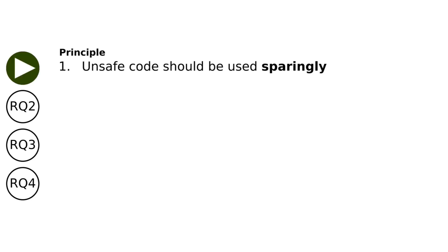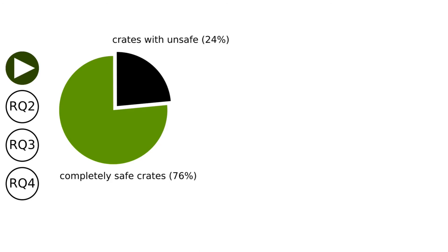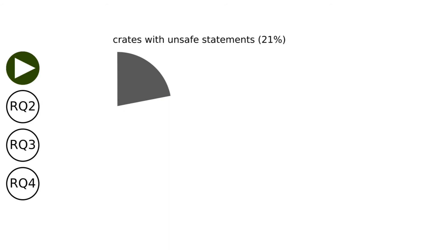Let's now look at our four research questions one by one. The first principle claimed that unsafe code should be used sparingly. Therefore, our first question is: how often does unsafe code appear explicitly in Rust crates? In our dataset, we found that almost a quarter of crates contain at least one use of some unsafe feature, such as an unsafe block, an unsafe function, or an unsafe trait.